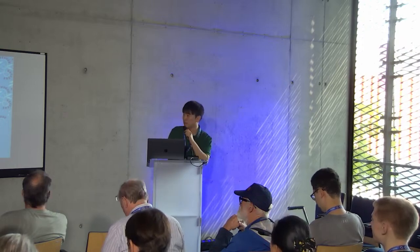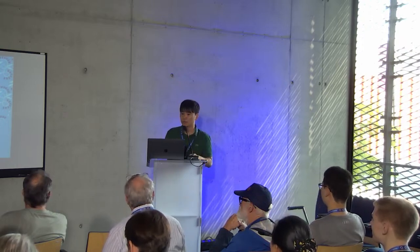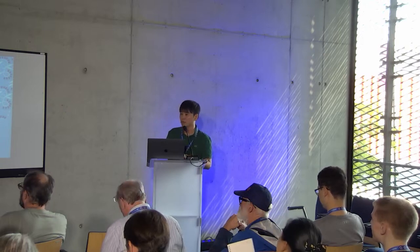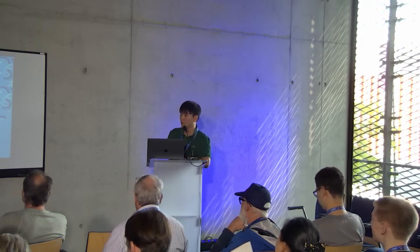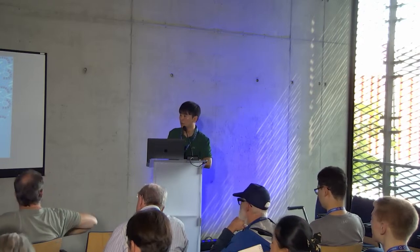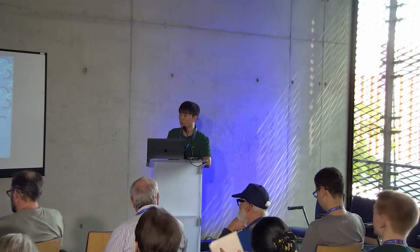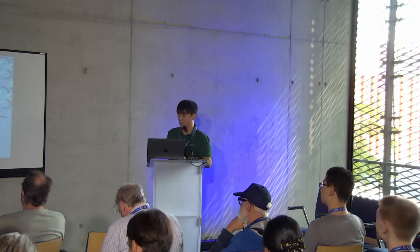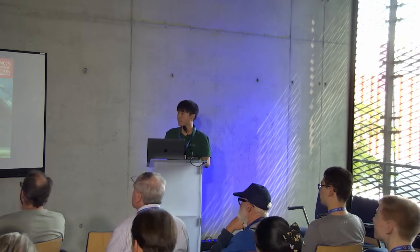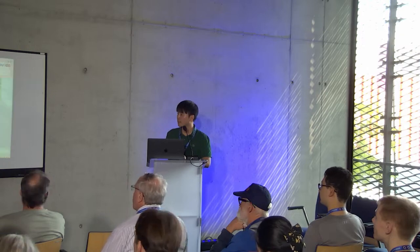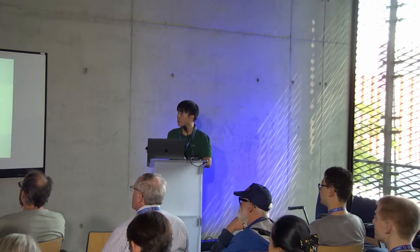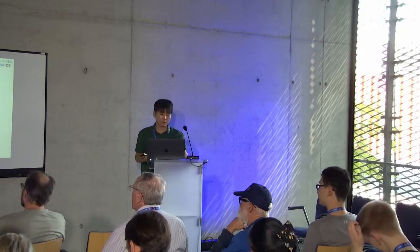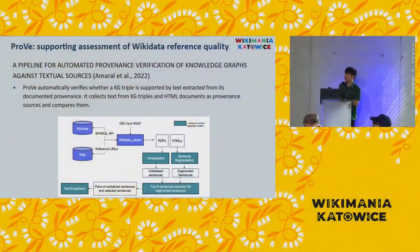Thank you. Our presentation for Proof — this is a kind of reference checking tool. I'm the developer of this tool, but it is still under development so it has some problems, but we can test it at least. This tool is based on the paper: 'A pipeline for automated provenance verification of knowledge graphs against textual sources.' It's a complicated title, and I made a very simple data flow diagram for better understanding.